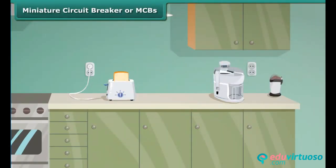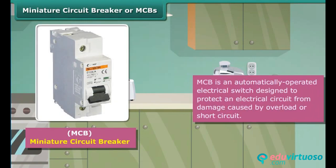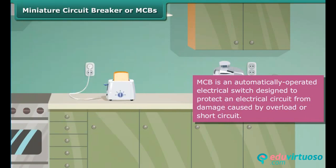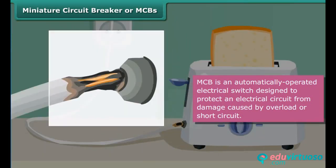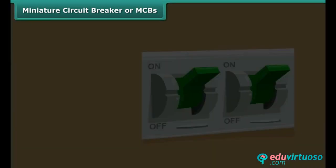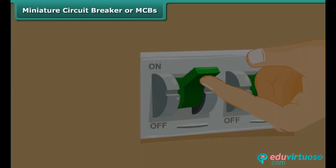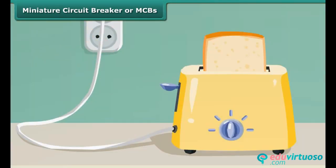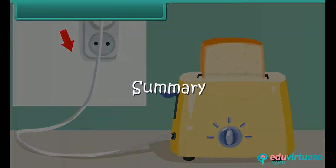A miniature circuit breaker, or MCB, is an automatically operated electrical switch designed to protect an electrical circuit from damage caused by overload or short circuit. Whenever there is a fault in a circuit, the MCB interrupts continuity to discontinue electrical flow immediately. It can be reset to resume normal operation.